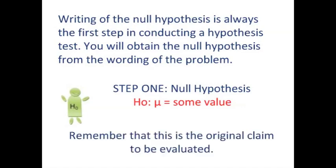Remember that the null hypothesis is the original claim to be evaluated. So if you set out on a six-step plan to conduct a hypothesis test, you've just solved step one. Step one is the writing of the null hypothesis. And in our case, it's going to be H₀, and it's going to say that the population mean μ equals some value.